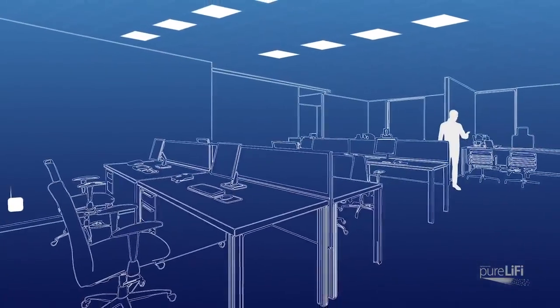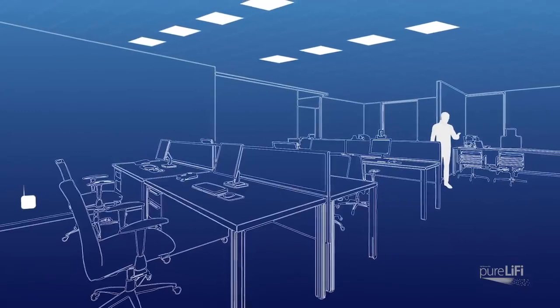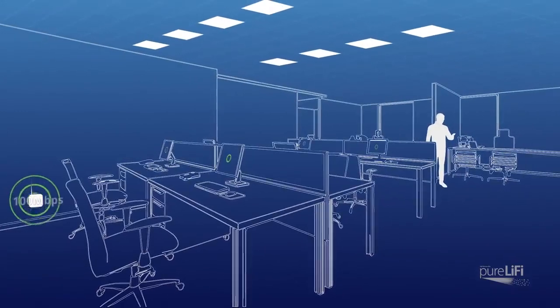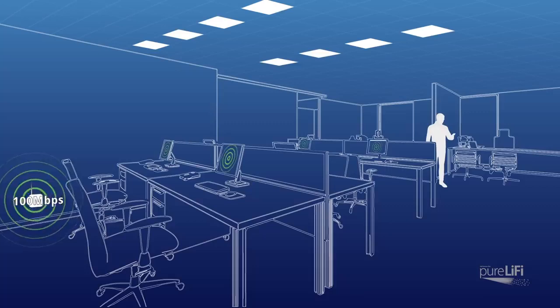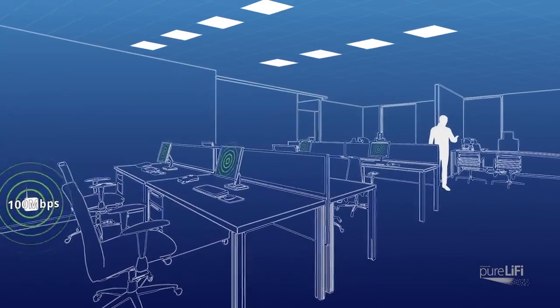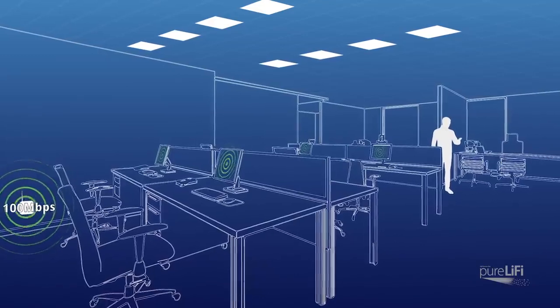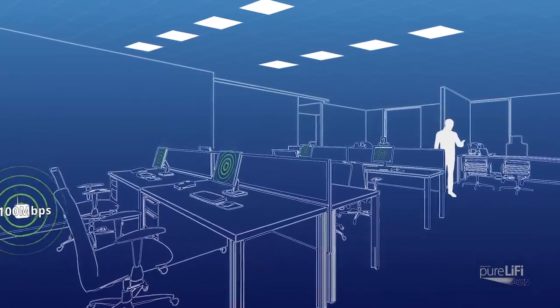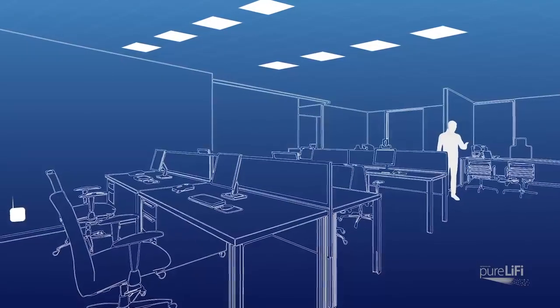Li-Fi offers greater density than many other radio frequency solutions. For example, if you have an average Wi-Fi router in your office that provides up to 100 megabits per second and 15 people are connected to that router, it means that you might only be able to access 4 megabits per second.